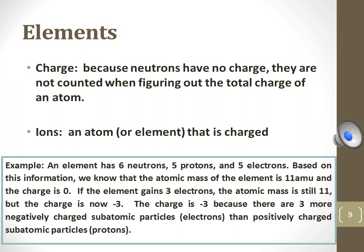This example explains that if the fifth element boron with five protons and five electrons naturally were to gain three electrons, then the charge of the element would become negative three.